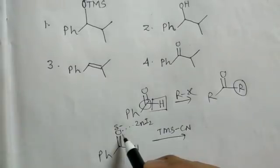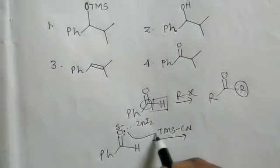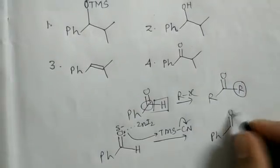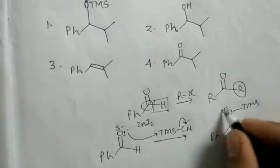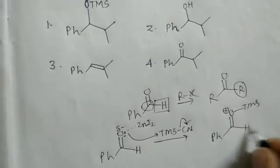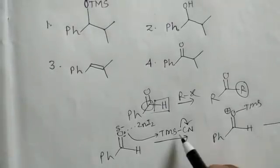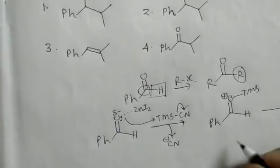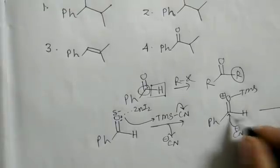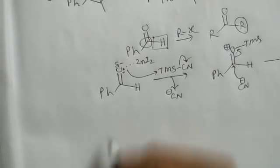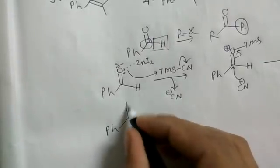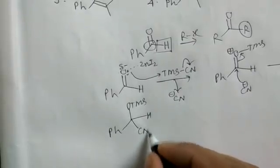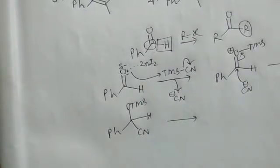Now with TMSCN present, the oxygen attacks the TMS group of TMSCN, giving an O-TMS intermediate with a positive charge, and the cyanide is released. The cyanide then attacks the carbon center, giving an O-TMS intermediate bearing both a hydrogen and a cyanide group.